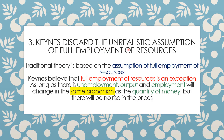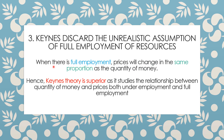The third point is that Keynes discards the unrealistic assumption of full employment of resources on which the entire traditional theory is based. Keynes believes that full employment is an exception. As long as there is unemployment, output and employment will change in the same proportion as the quantity of money, but there will be no rise in prices. Once full employment is reached, prices will change in the same proportion as the quantity of money.